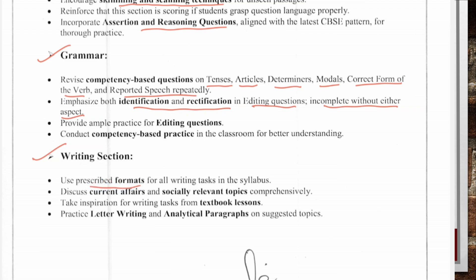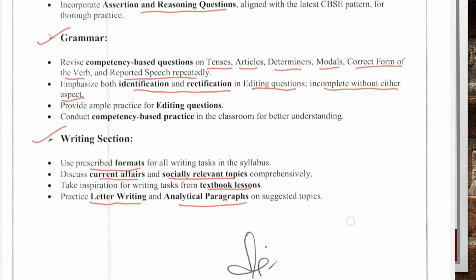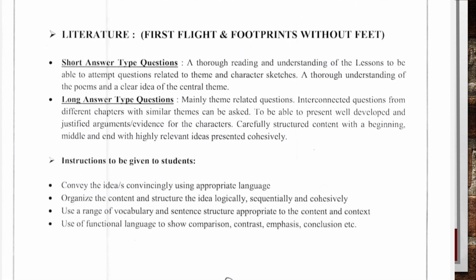In the Writing section, use prescribed formats for all writing tasks, discuss current affairs and socially relevant topics, take inspiration for writing tasks from textbook lessons, and practice letter writing and analytical paragraphs on selected topics. From Literature — First Flight and Footprint Without Feet — practice short-type and long-type questions involving reading and understanding of lessons, attempt questions related to theme and character sketch, and long answers mainly on theme-related questions. Interconnected questions from different chapters with similar themes can also be asked.